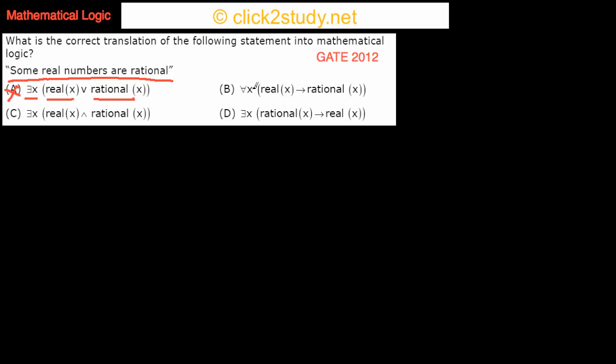The next option says: for all X, Real(X) implies Rational(X). This is saying that for all real numbers, if X is real then X is rational — meaning all real numbers are rational. That's not what we want to express either.